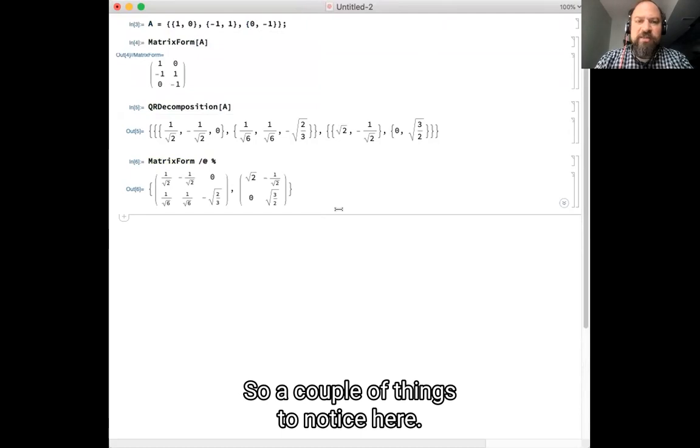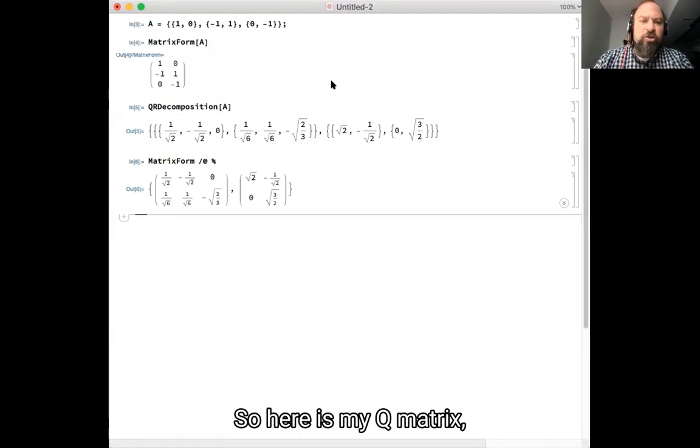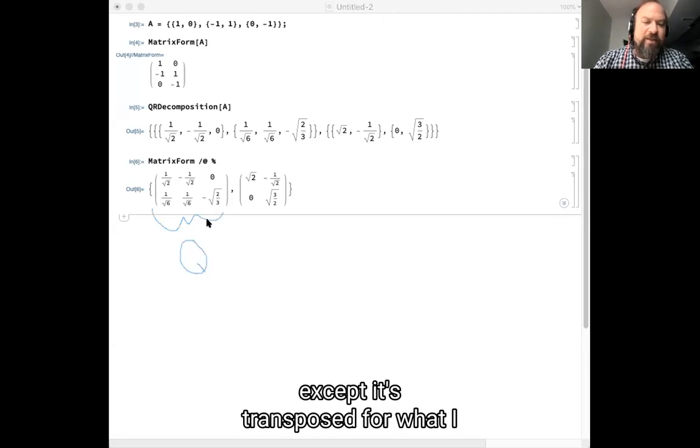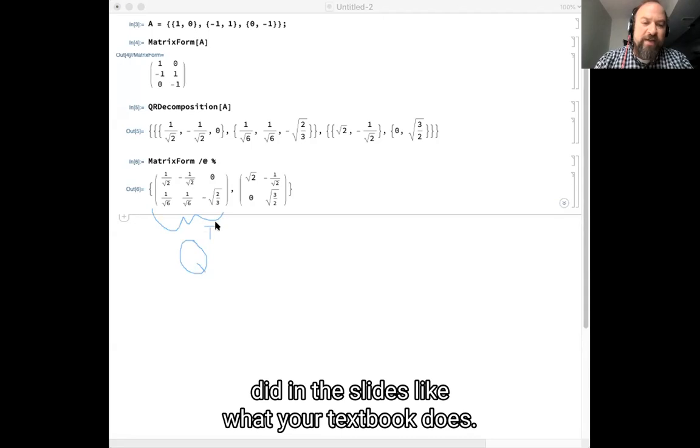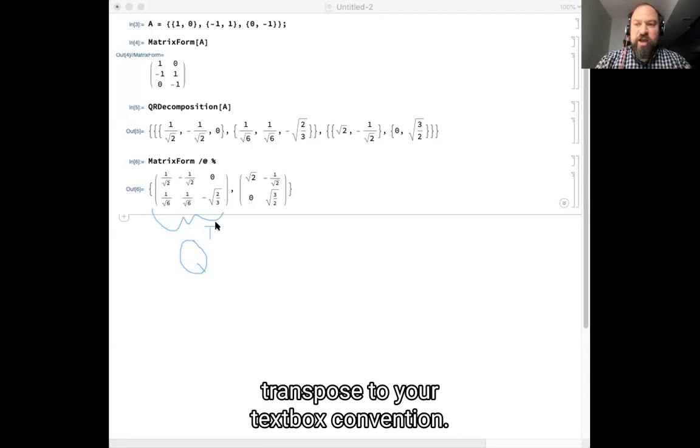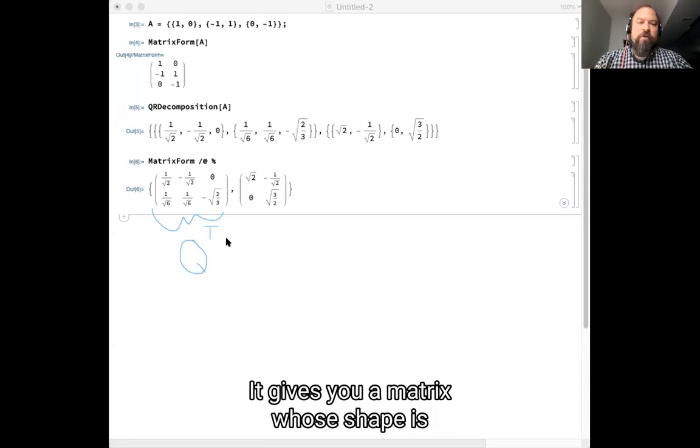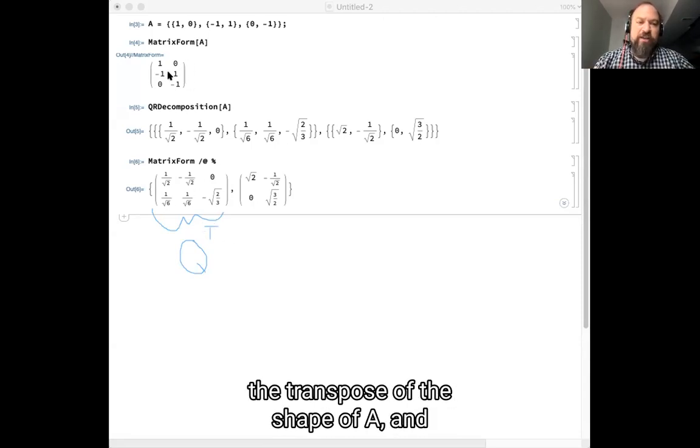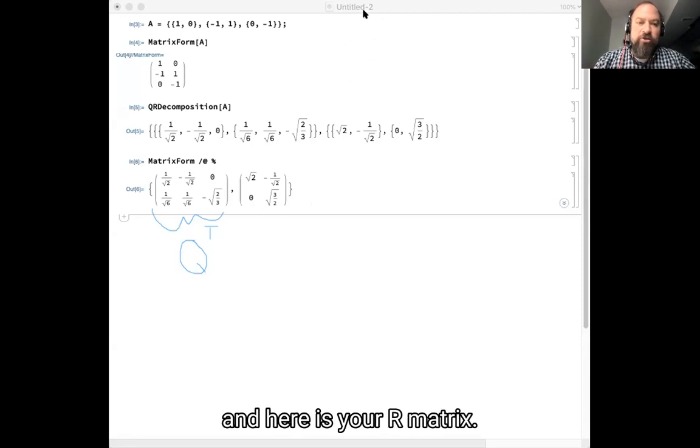So a couple of things to notice here. So here is my Q matrix, except it's transposed for what I did in the slides or what your textbook does. So Mathematica's convention is transposed to your textbook's convention. It gives you a matrix whose shape is the transpose of the shape of A. And here is your R matrix.